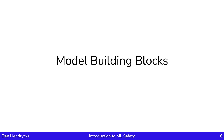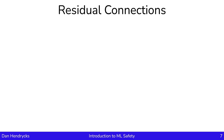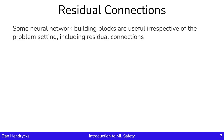Let's now discuss model building blocks. Our first building block is residual connections. Residual connections are a fairly general-purpose building block. They can be used in many different problem settings, such as vision, speech, or natural language processing, and they can be used in many different architectures, such as ResNets, transformers, or multilayer perceptrons. In this way, they're fairly general purpose.